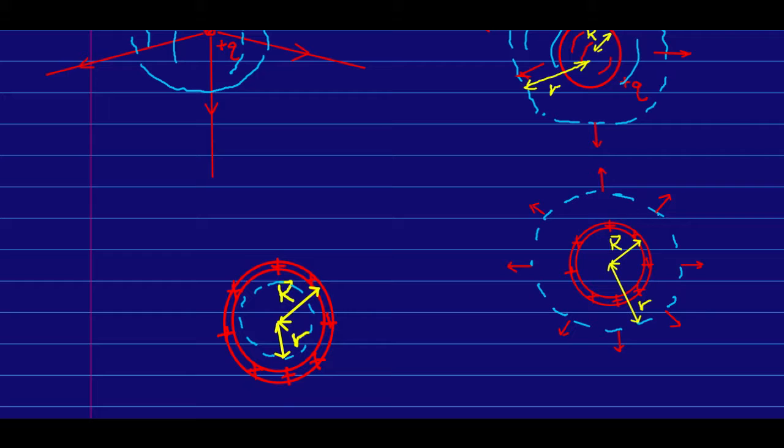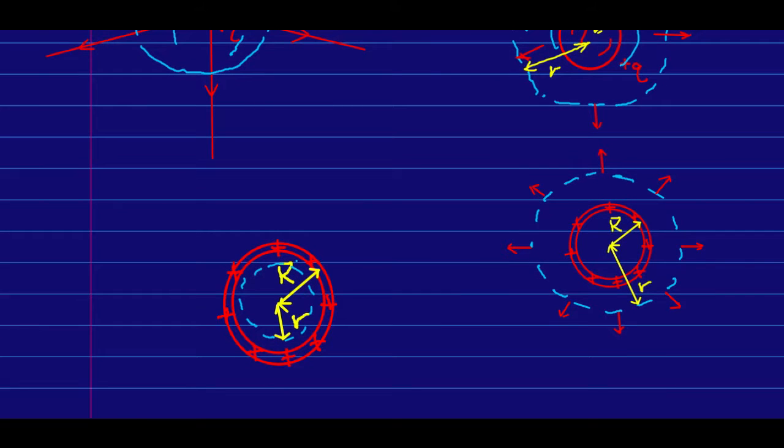Now, what happens if we take our surface and we shrink it, so that the whole surface is inside the sphere? Once again, the spherical symmetry tells us that any E field must be perpendicular to this surface and must have the same magnitude everywhere on it.